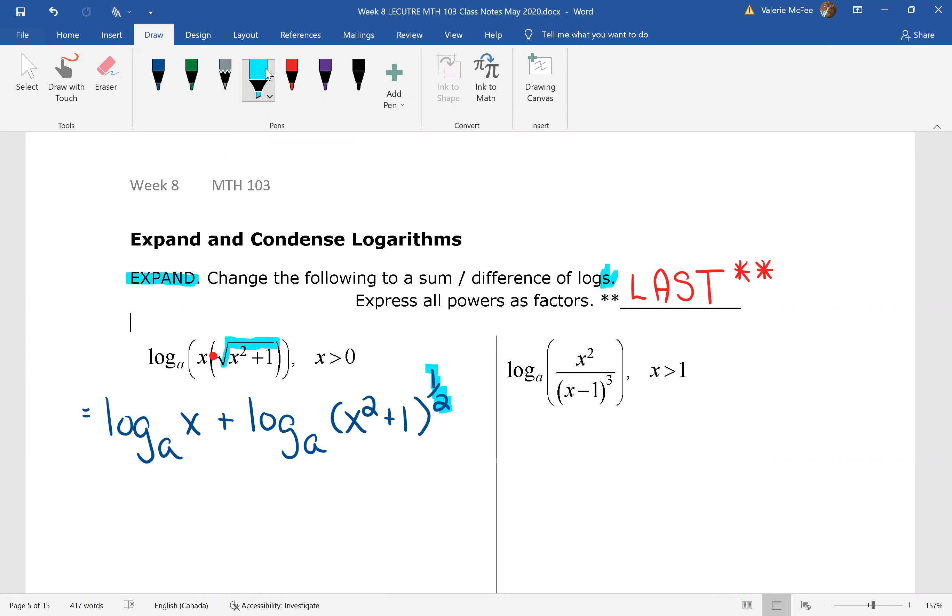All I need to do now is take that power of one half and write it as a factor. One half multiplying log base a of x squared plus one.